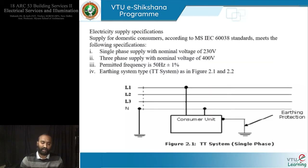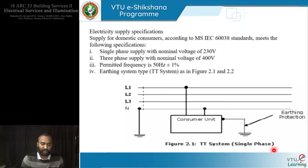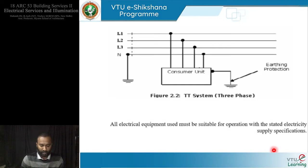Before we get to the wiring part, we will quickly know about the specifications. Supply for domestic consumers, according to International Electro-Technical Commission standards, should meet the following: single-phase supply with nominal voltage of 230 volts, three-phase supply with nominal voltage of 400 volts, frequency is 50 hertz plus or minus 1 percent, and earthing system as per the referenced figures.